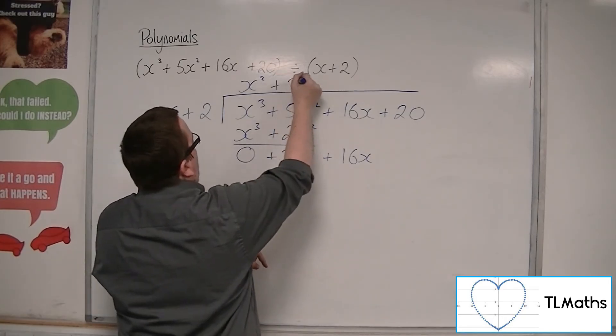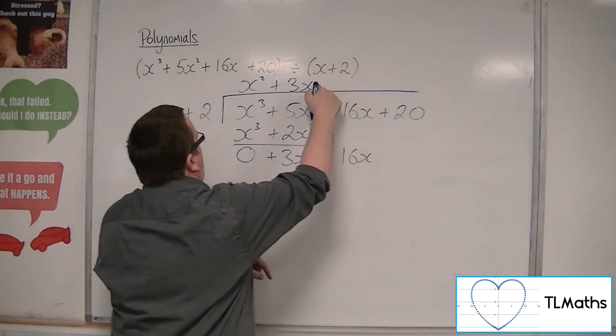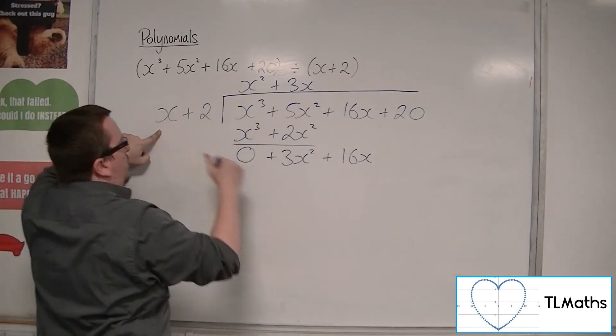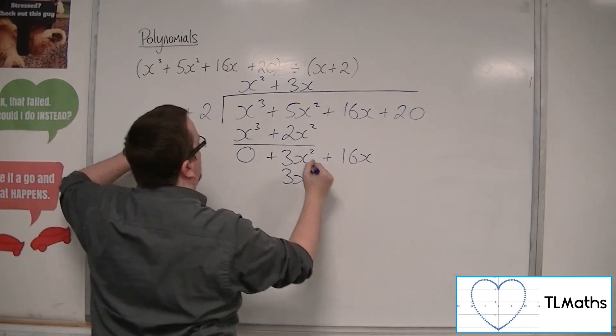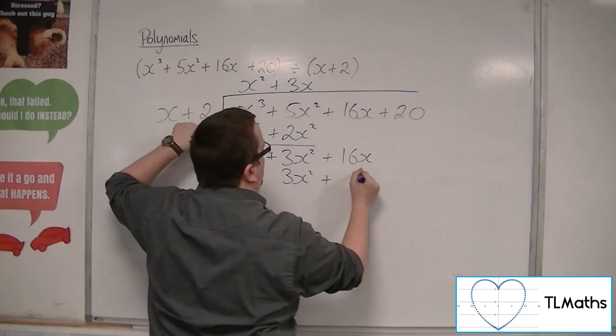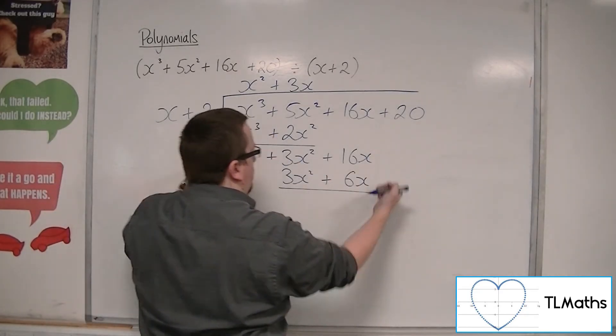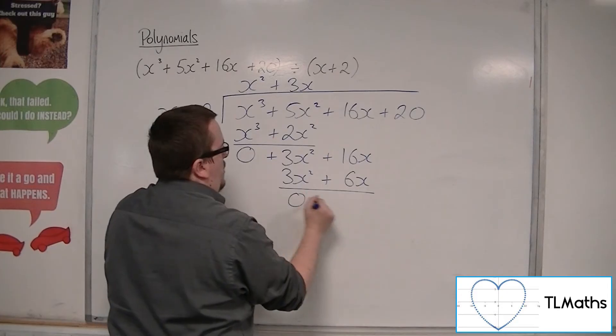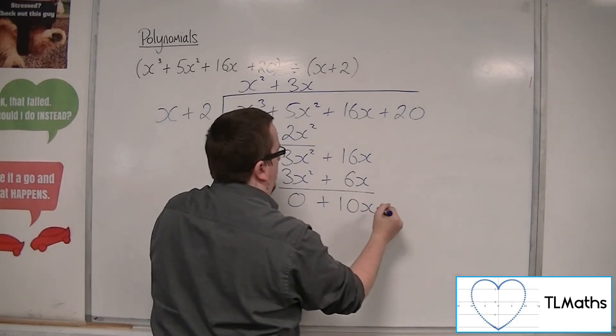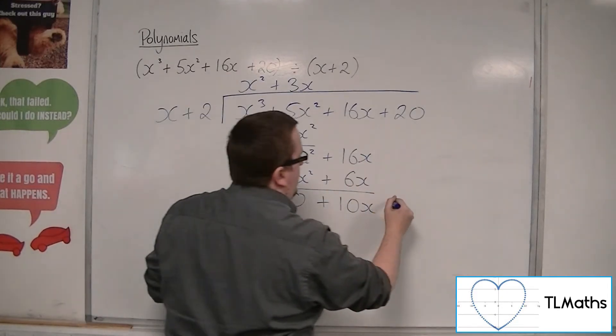So that gets you 3x. 3x multiplies with the x plus 2 to make 3x squared, and 3x times 2 is 6x. Draw a line, perform a subtraction. 0 plus 10x. Bring the 20 down.